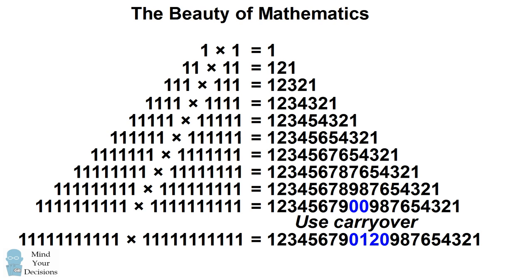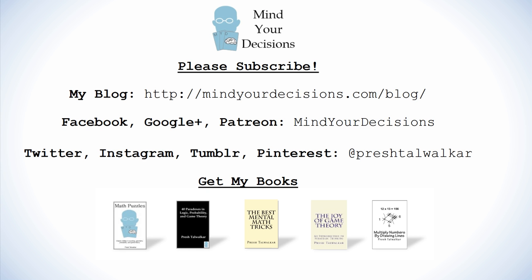So you could use this method to calculate multiplying any number which has just ones by itself. It's an interesting way to see why when you multiply a repunit number by itself, you end up with this interesting pattern of palindromes. Thanks for watching this video. Please subscribe to my channel — I make videos on math and game theory. You can catch me on my blog, Mind Your Decisions, which you can follow on Facebook, Google Plus, and Patreon, and on social media at Presh Talwalkar. If you like this video, please check out my books — I've provided links in the video description.